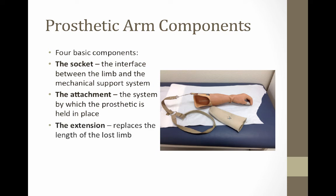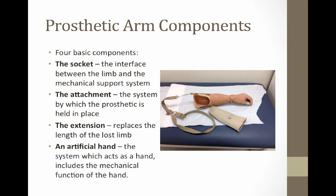The third component is the extension, which replaces the length that has been lost by the loss of the limb. Finally, there is some type of artificial hand, which acts as and replaces the functionality of a hand — including gripping, holding, and all the activities that a hand would do.